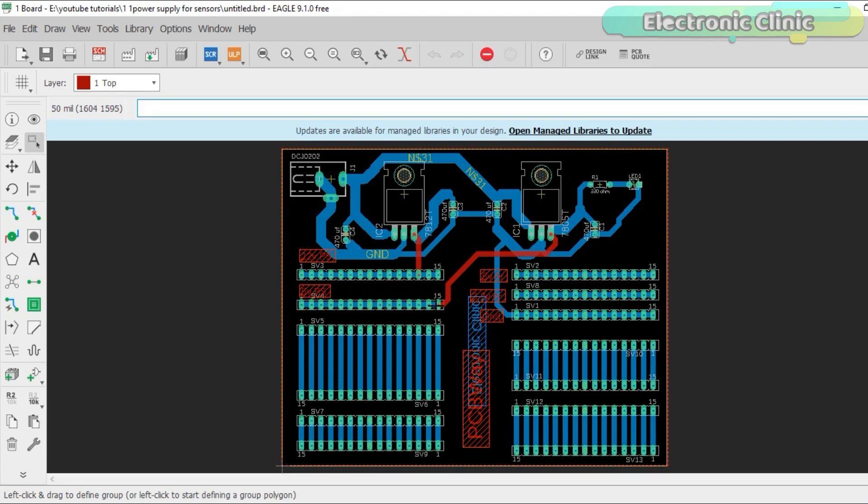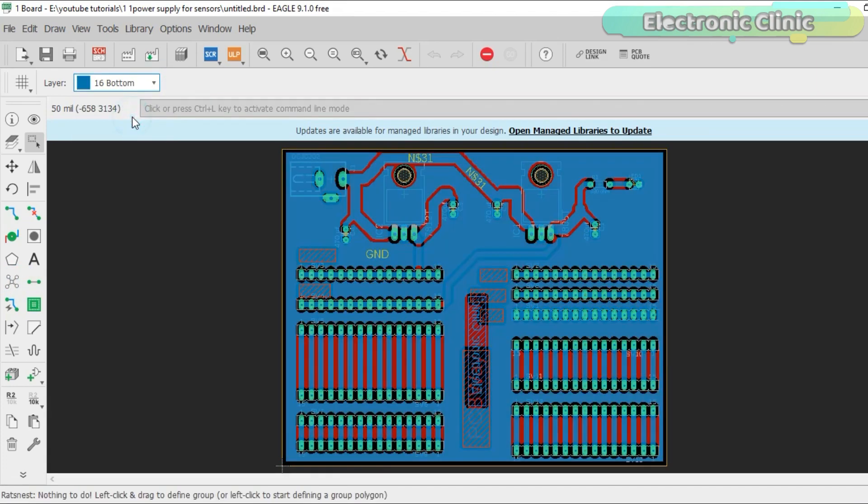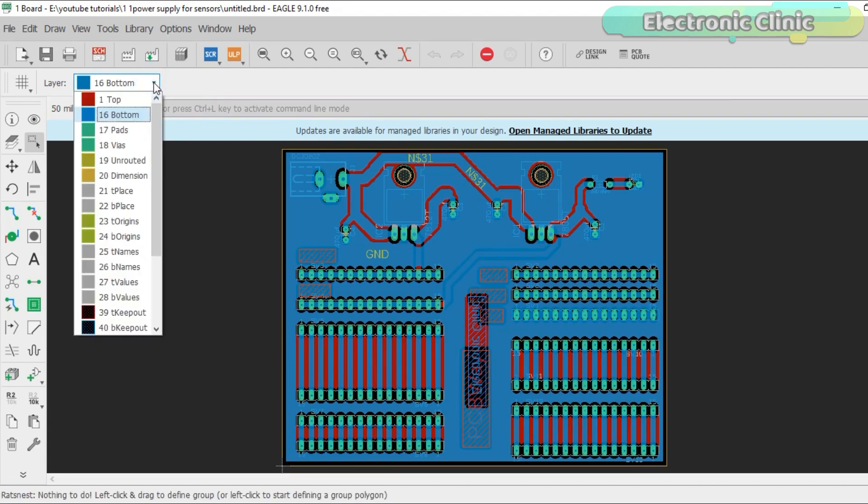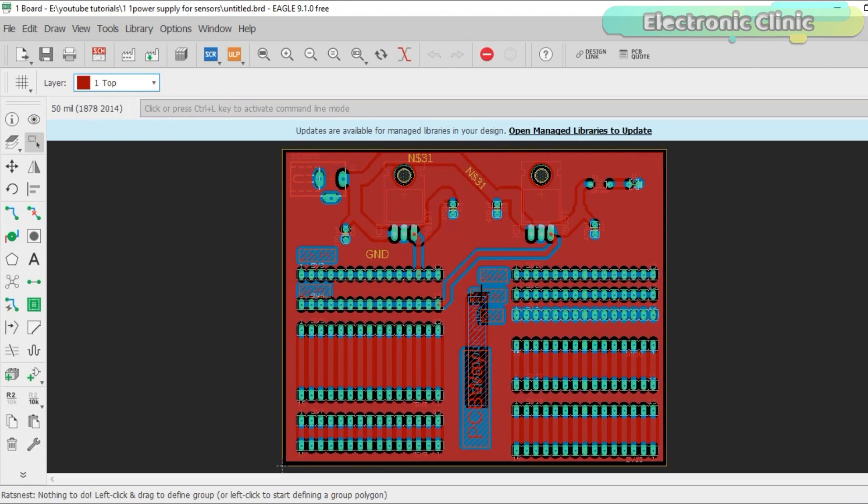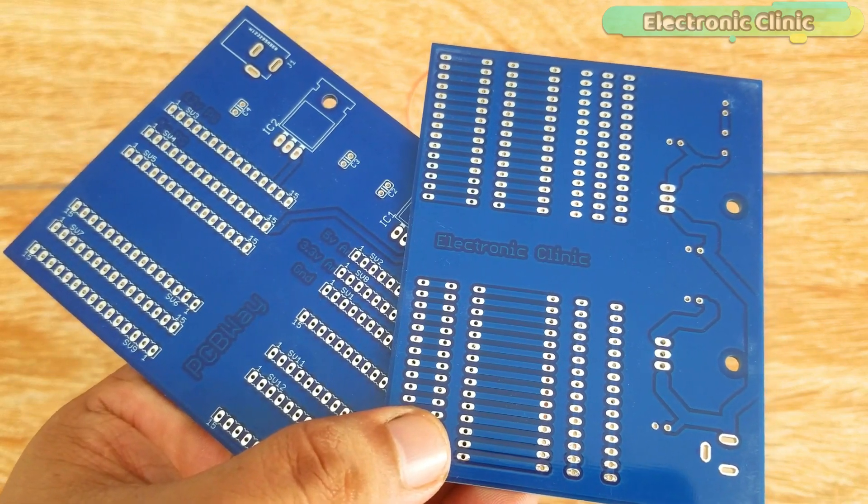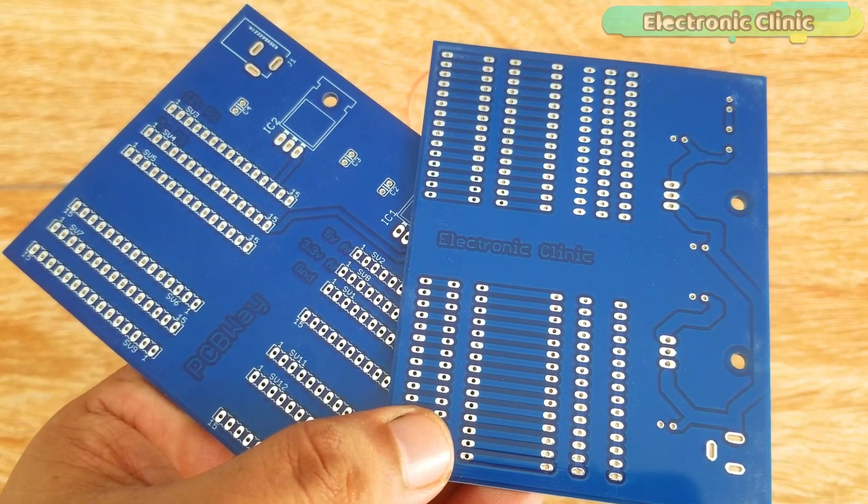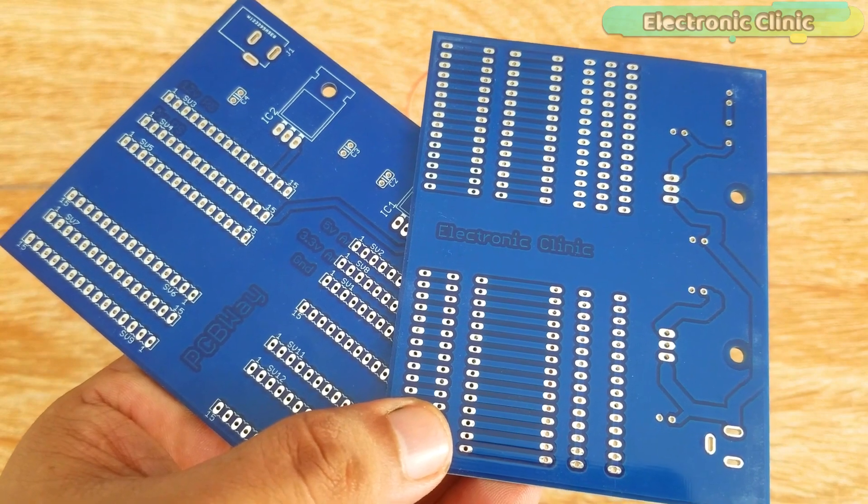After I was done with the PCB designing then I placed an online order on the PCBWay official website. I have a separate video on how to generate the Gerber files and how to place an online order. The link is given in the description. These are the PCBs manufactured by the PCBWay company. As you can see the quality is really great. Now let's start the soldering.